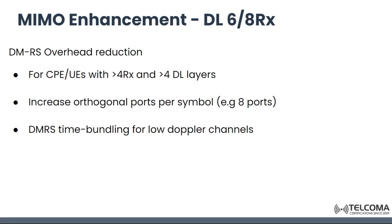The next MIMO enhancement is downlink 6/8 Rx with DMRS overhead reduction. For CPE UEs with greater than four receivers and greater than four downlink layers, we can increase orthogonal ports per symbol — for example, eight ports. DMRS time bundling is also available for low Doppler channels.